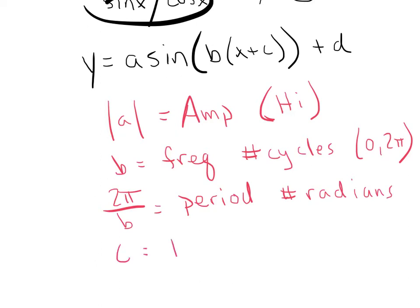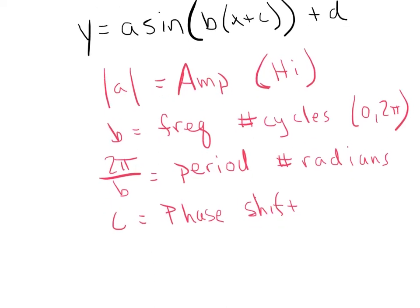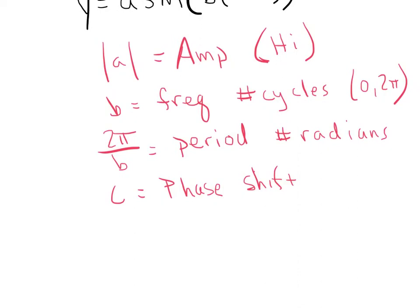The C value is what we call your phase shift or horizontal shift. It's going to be the opposite of what you perhaps think it should be. When you see plus C, it's actually left C. And if you see minus C, it's to the right C. The very last letter dangling outside those parentheses, the D, is your vertical shift. That one is easy to read. It is exactly what you think: if you see plus D, we're going up; if you see minus D, we're going down.